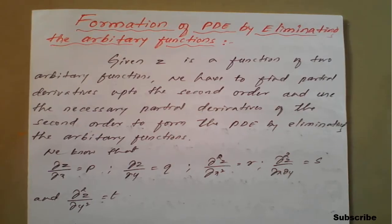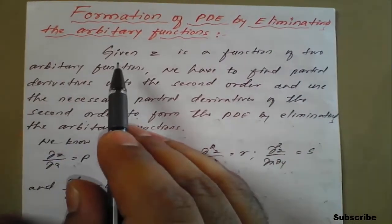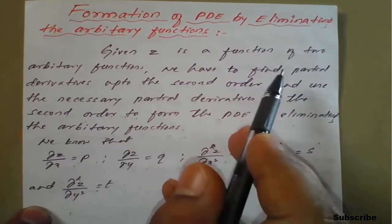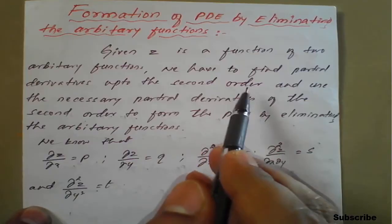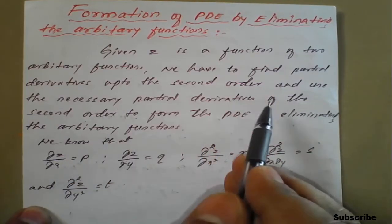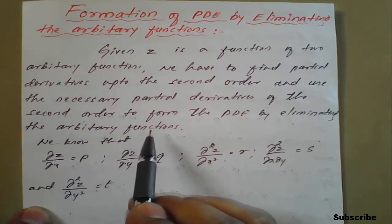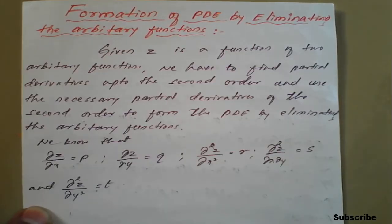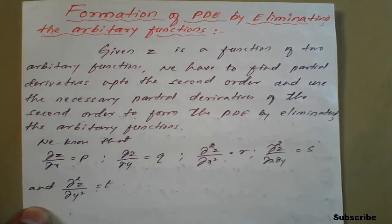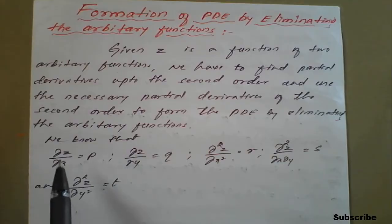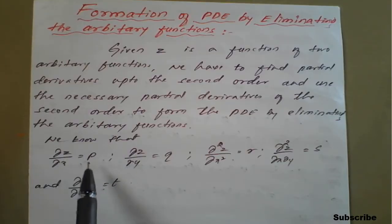In today's lecture, the given equation Z is a function of two arbitrary functions, and we have to find partial derivatives up to second order and use the necessary partial derivatives to form the PDE by eliminating the arbitrary function. Remember: if one function is there, we need to apply only the first order partial derivative; if two or more functions are there, we need to apply second or higher order partial derivatives to eliminate the arbitrary function.